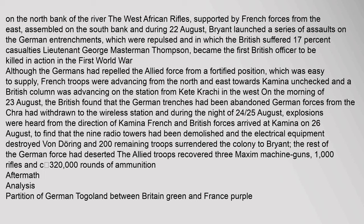On the morning of 23 August, the British found that the German trenches had been abandoned. German forces from Chra had withdrawn to the wireless station, and during the night of 24–25 August, explosions were heard from the direction of Kamina. French and British forces arrived at Kamina on 26 August to find that the nine radio towers had been demolished and the electrical equipment destroyed. Von Doering and 200 remaining troops surrendered the colony to Bryant. The rest of the German force had deserted. The Allied troops recovered three Maxim machine guns, 1,000 rifles, and approximately 320,000 rounds of ammunition.